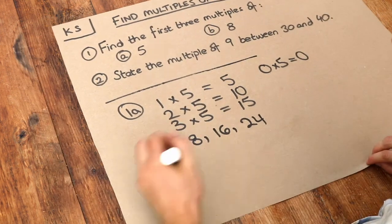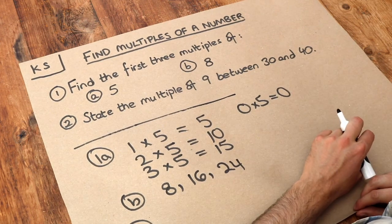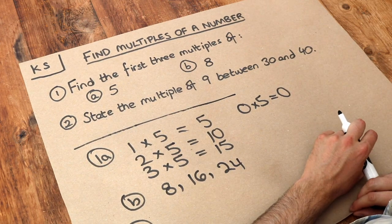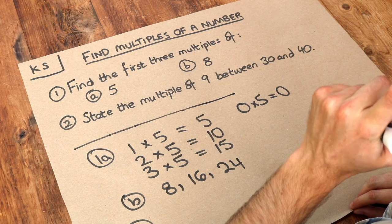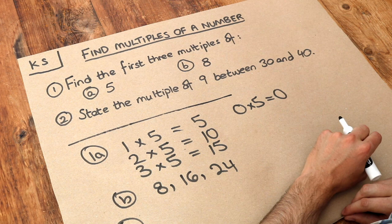This last one is a bit more of a problem-solving question. State the multiple of nine that's between thirty and forty. Well, let's list the first few multiples of nine and keep going until we see a number between thirty and forty.